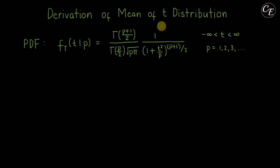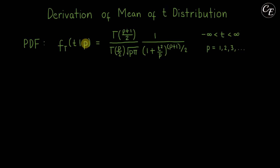The random variable for the t-distribution is t. The range of its values is from negative infinity to positive infinity. The parameter p is a constant — it refers to the number of degrees of freedom for this t-distribution. Its value should be an integer and should be at least one.